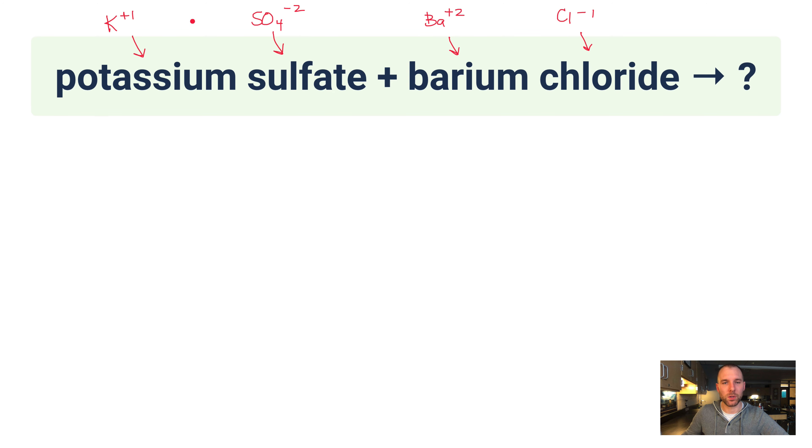So let's put together the formulas for our two reactants, and then we'll figure out what the two product formulas would be. Potassium sulfate, if you just crisscross the charges, you get K2SO4. So there's potassium sulfate's formula. Then you've also got barium chloride, so that's a 2+ with a 1-, that's got to be BaCl2. So these are our two reactants.